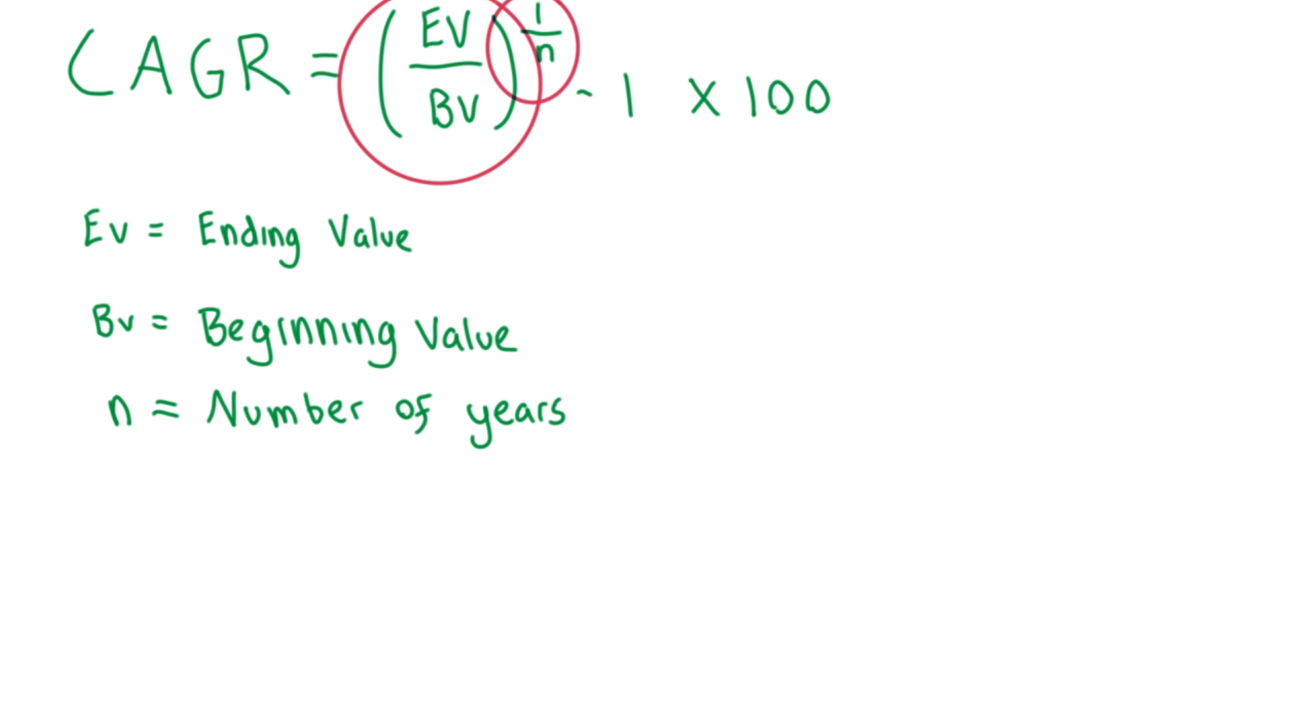If it's less than a year or an irregular holding period such as 1 year and 30 days, then we need to get the number of days in the period divided by 365.25, which is the days in a year for the value of N. We subtract 1 from the subsequent result to derive the decimal value of the CAGR. And finally, we multiply by 100 to convert the decimal into a percentage.